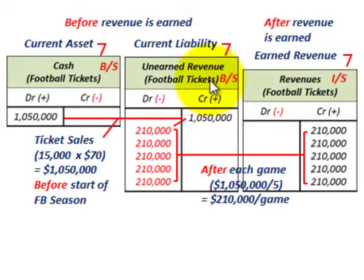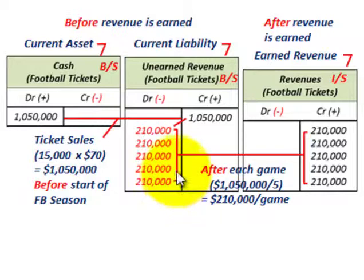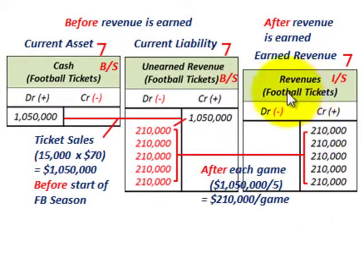So remember, when you're dealing with unearned revenues, you have to set up this current liability account on your balance sheet and identify what it is — in this case, football tickets. And because we received cash, which is a current asset, in advance, you record the cash entry and increase your current asset account. When you actually earn the revenues, you reduce your current liability unearned revenue account by the amount earned in each period — we had five games. At the same time, you'd be crediting or increasing your revenues account — that's the earned revenue on our income statement.